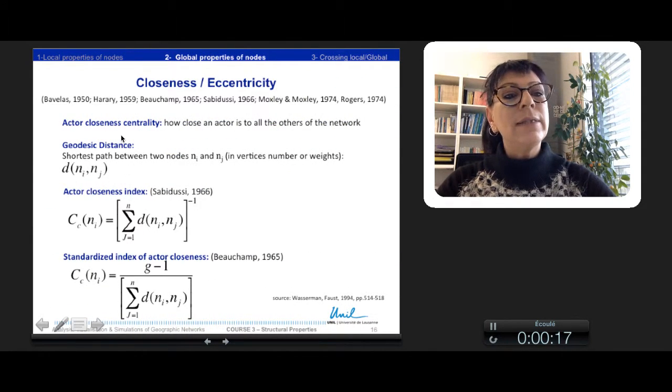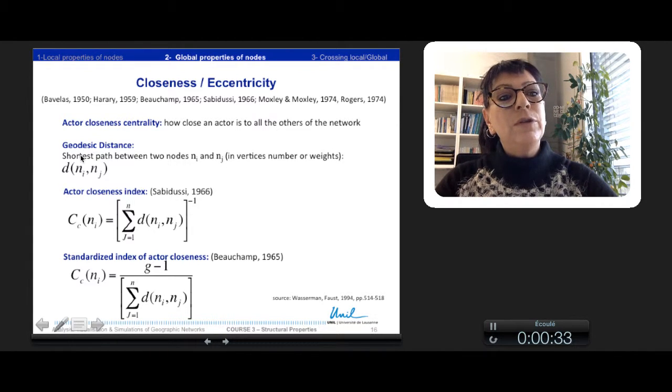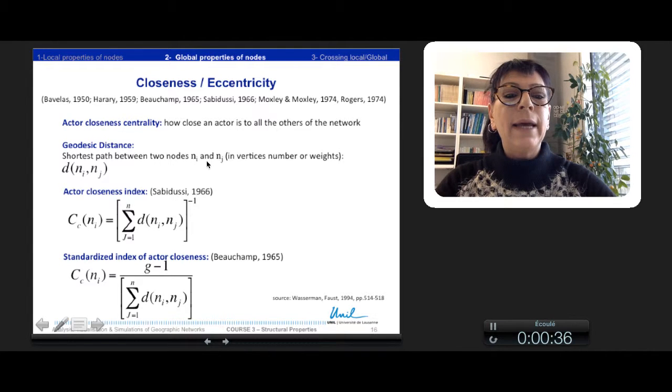Actor's closeness centrality reflects how close an actor is to the others of the network. We use for this a geodesic distance, which is evaluated with the shorter paths between two nodes, Ni and Nj. So the measure of all the shorter paths with a distance here, we calculate the index.